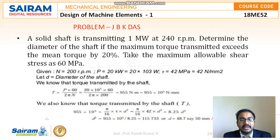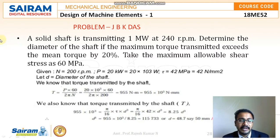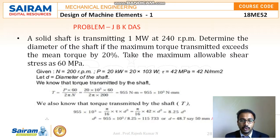Given data: speed is 200 rpm, power is 20 kilowatts, and shear stress value is 42 mega Pascal. We know that T = P × 60 / (2πN). Substituting power as 20 × 10³ and N as 200, I get the torque value as 955 × 10³ N·mm.